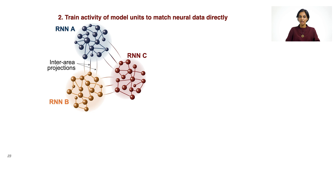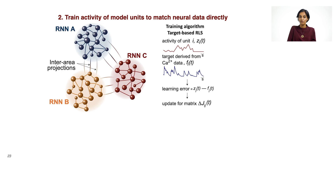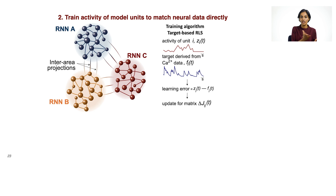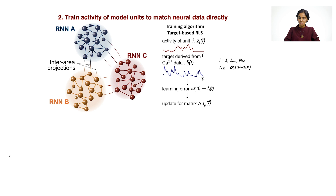In the multi-region RNN, the recurrent interaction matrix has sub-matrices that capture both within-area interactions as well as inter-area interactions. This becomes powerful when you look at the difference between within-region connectivity versus between-region connectivity. The second step is to take the activity of the model units and train them to match neural data directly, using a target-based training algorithm. Each unit's activity is trained to match a target derived directly from calcium imaging data in the larval zebrafish. The learning error is the linear difference between the activity of each unit and a target function, and the connectivity matrix is updated at every time step. We're building networks that are about 10,000 units big, spread between 1 to 13 different regions in the larval zebrafish.